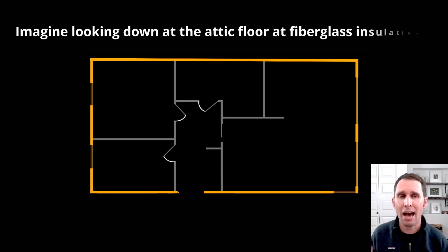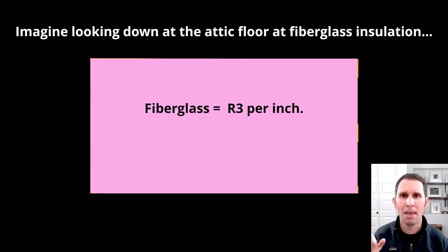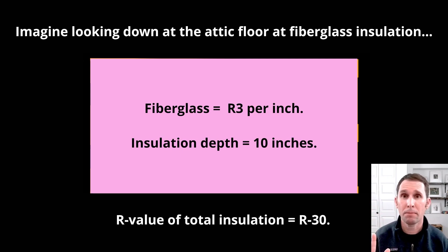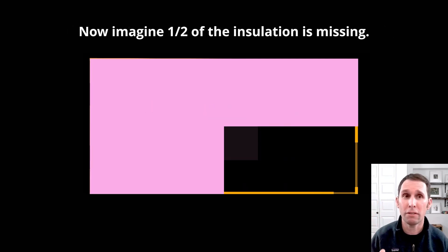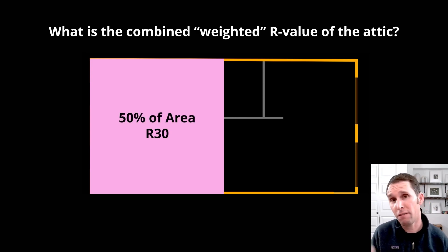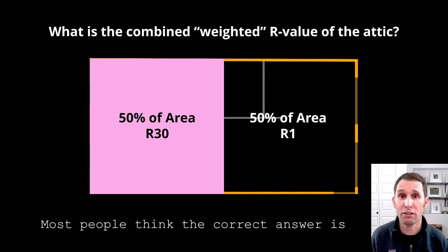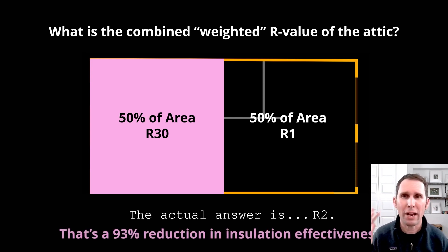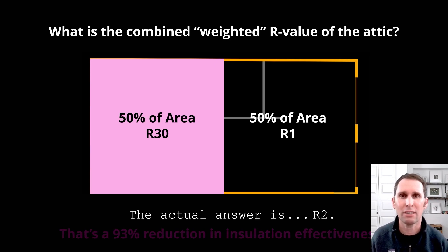Imagine looking down at an attic floor. That's the ceiling, but you're looking down from above. And it's got fiberglass, which is R3 per inch of insulation at a level of 10 inches deep. So, the total R-value of that insulated area is R30. Now, imagine again looking at this area and we remove half of that insulation. So, what do you think the combined or weighted R-value of this attic floor is? So, 50% has R-value of R30. The other 50%, let's just say that's a piece of drywall, has an R-value of R1. So, most people think the correct answer is the average of the two of them, about R15. That would be inaccurate. Believe it or not, the actual answer is R2. Mind blown. Wait, that's a 93% reduction in insulation effectiveness. How is that possible?